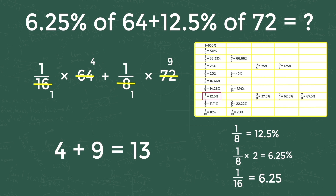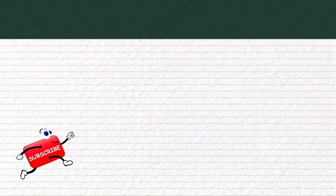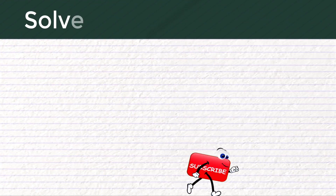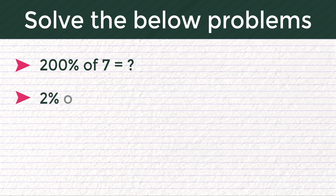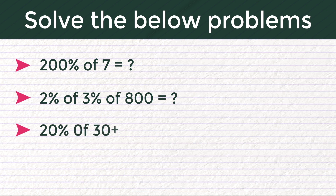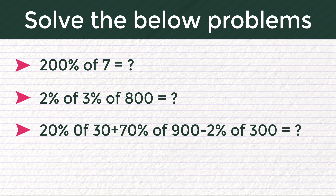4 plus 9 equals 13, so the answer is 13. If you understand the concept, try solving the below problems and comment your answers: 200 percentage of 7 is how much? 2 percentage of 3 percentage of 800 is how much? 20 percent of 30 plus 70 percent of 900 minus 2 percentage of 300 is how much? 56.25 percentage of 64 is how much?